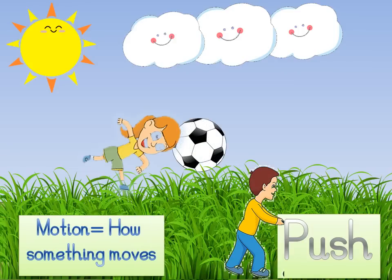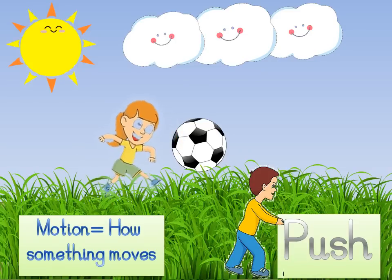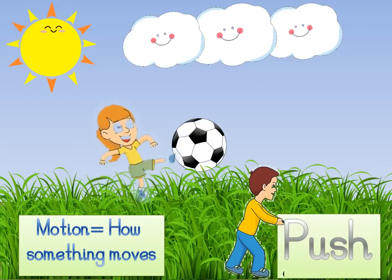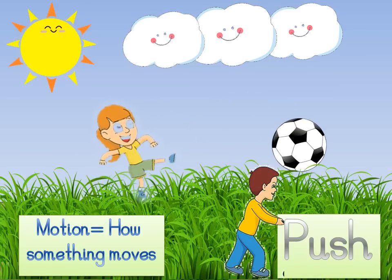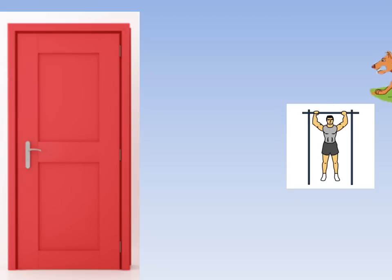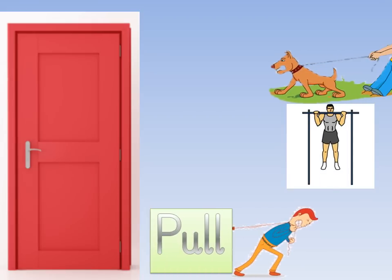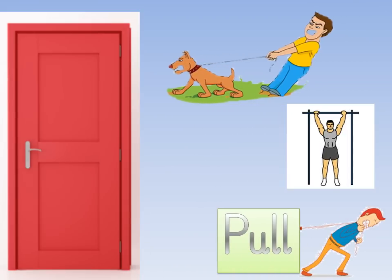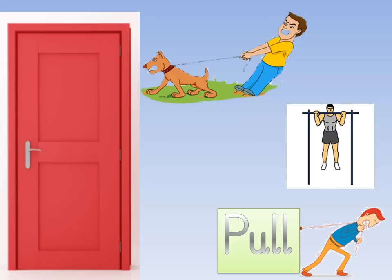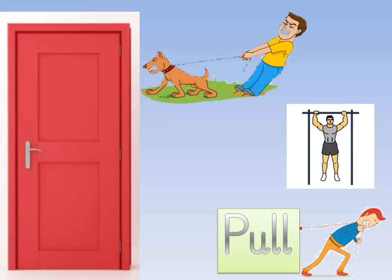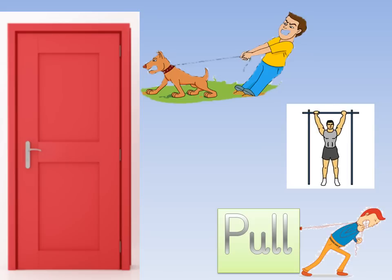When you kick a ball, you apply force to it, which makes it move. Pushing and pulling changes how things move — it might make them go faster, slower, or stop them altogether. When you pull a door open, you apply force to it, and this makes the door move.